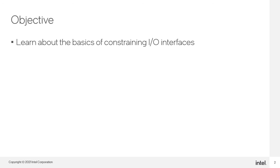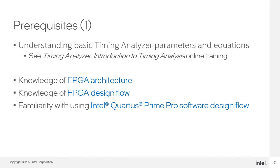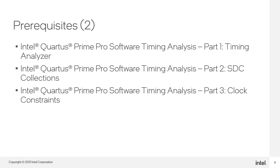In this course, I will go over the basics of constraining IO interfaces. Here are the recommended prerequisites: an online training called Time Analyzer Introduction to Timing Analysis found on the Intel FPGA YouTube channel or training website, knowledge of FPGA architecture and the design flow, and familiarity with Intel Quartus Prime Pro software. If you haven't done so already, check out our previous courses listed in this series.